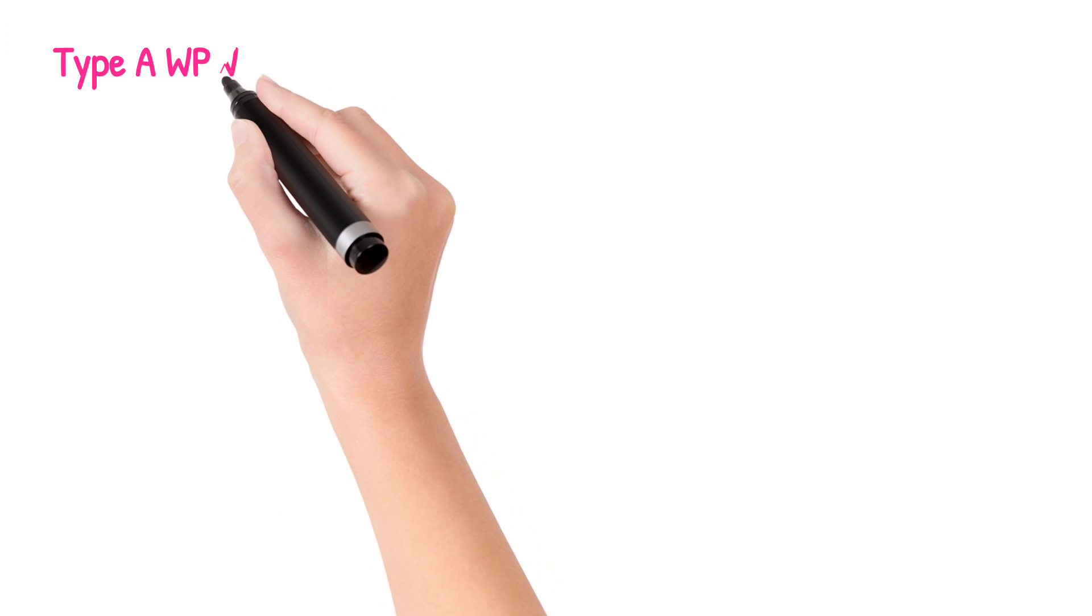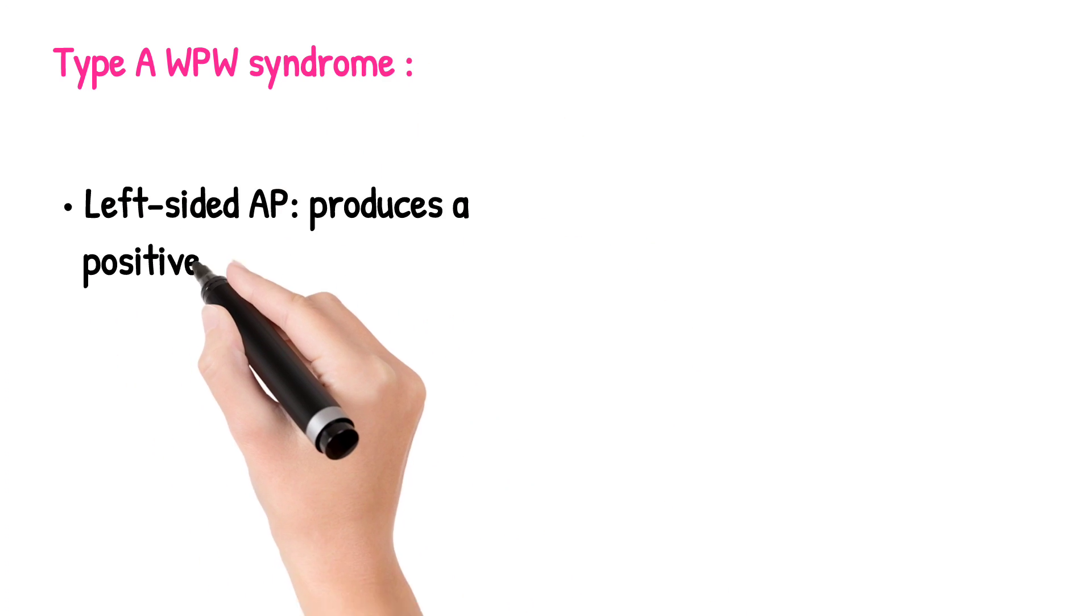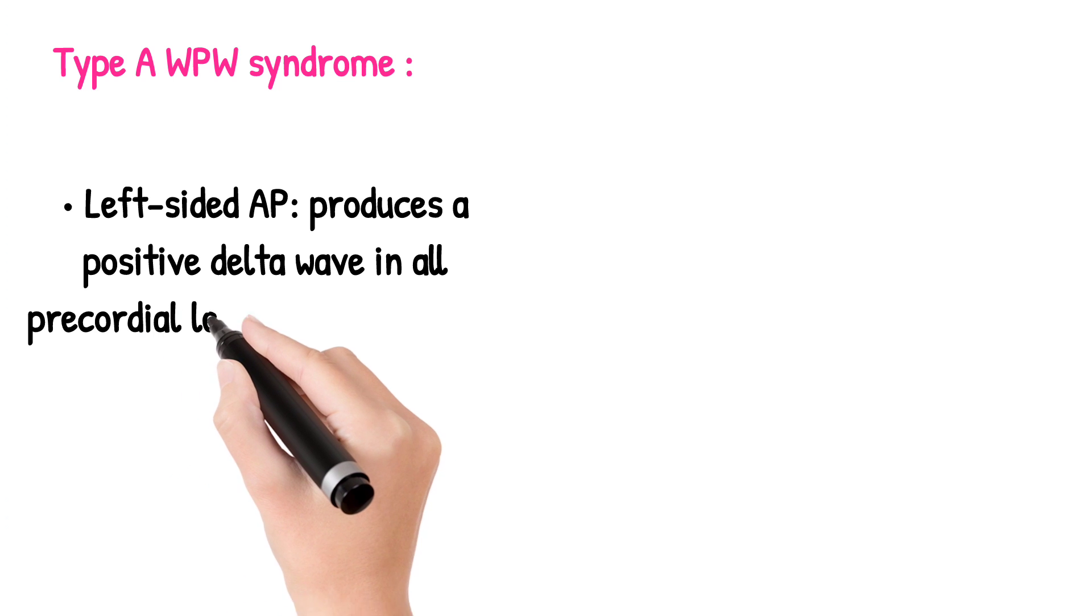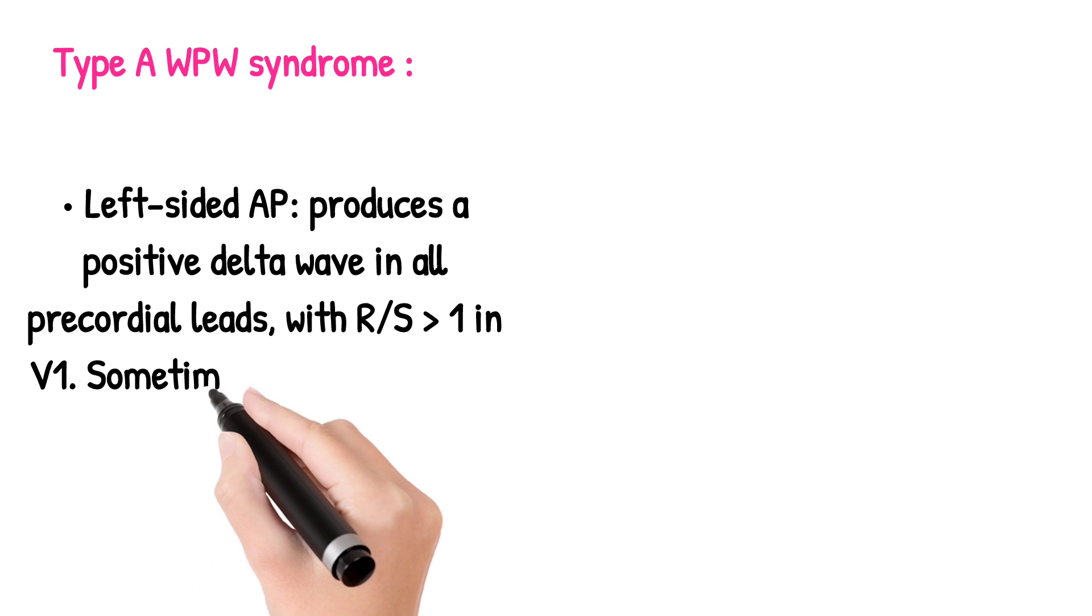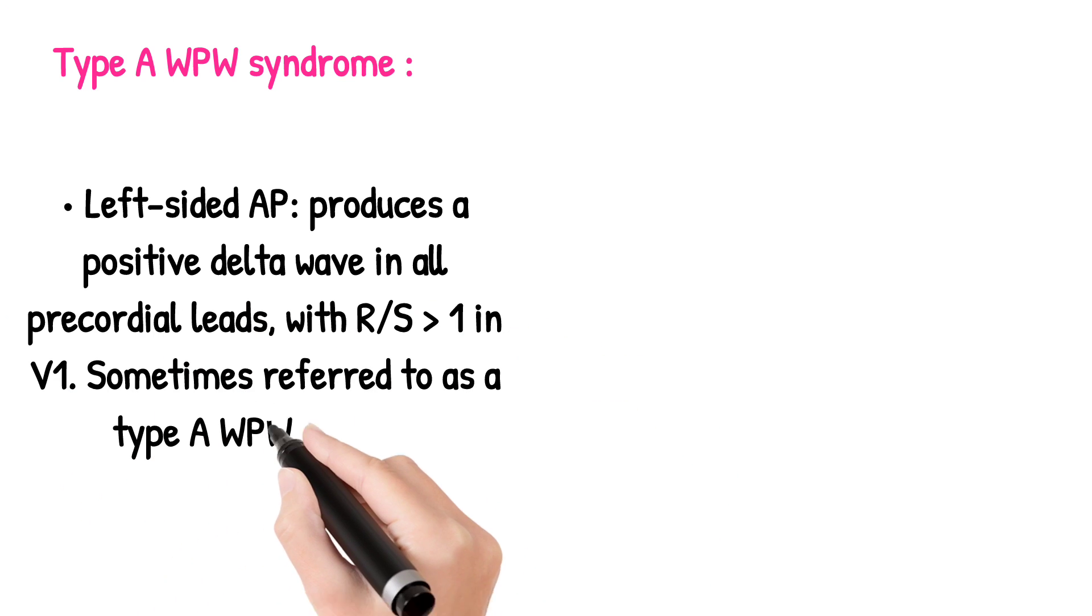Type A WPW syndrome: left-sided AP produces a positive delta wave in all precordial leads with greater than 1 in V1. Sometimes referred to as a type A WPW pattern.